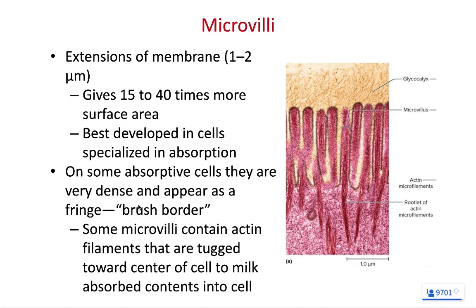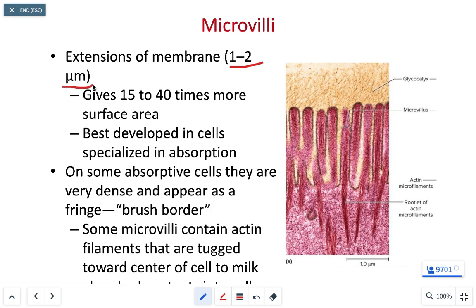Microvilli are extensions of the cell membrane that we've been talking about in lab this week. A key thing about microvilli is that it's a folding back and forth of the plasma membrane. They are pretty small — one to two microns in length — and you typically need the microscope at 400x total magnification to barely see them. The nice thing about microvilli is that because they cause the plasma membrane to fold back and forth repeatedly, they cause a dramatic increase in the surface area of the cell membrane, which increases the rate of absorption. Think of microvilli as a way of maximizing the rate of absorption.